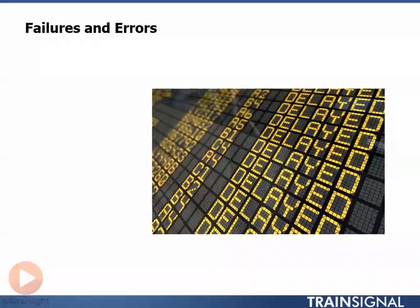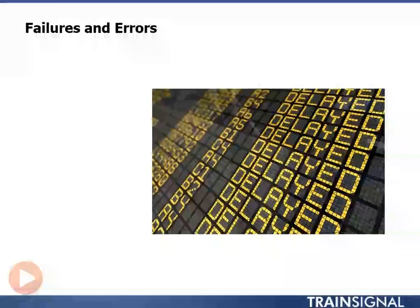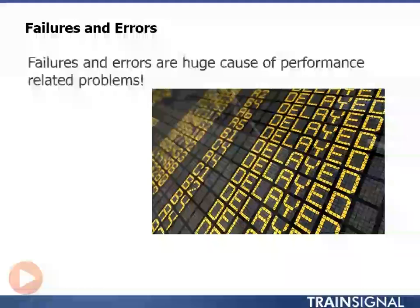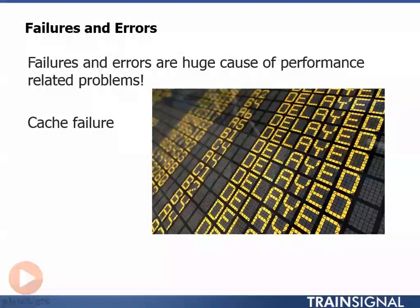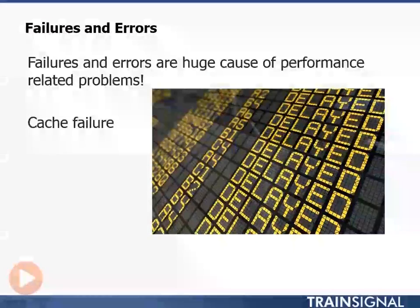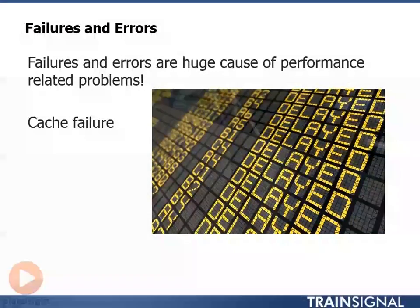Now let's talk about the impact that failures and errors have on system performance, because they can also be significant. We just talked about cache failures resulting in write-through operations where writes don't get acknowledged until they reach disk. This can bring the array and associated applications to their knees.